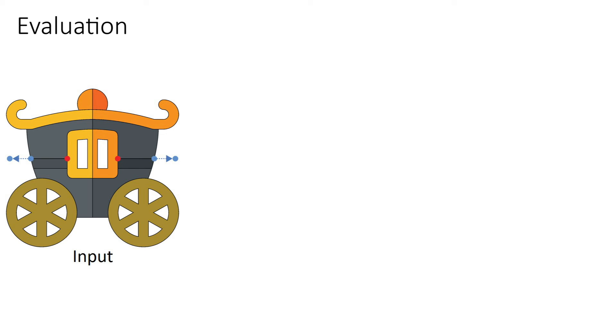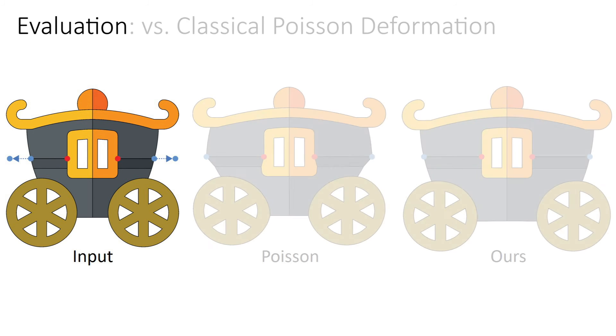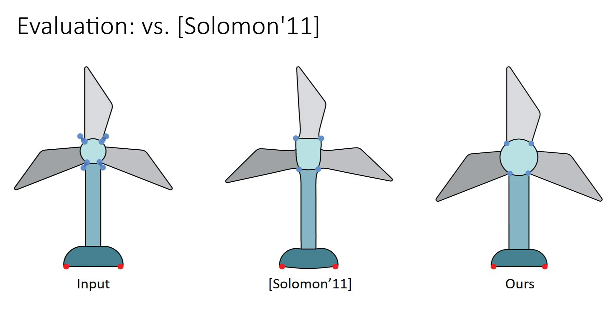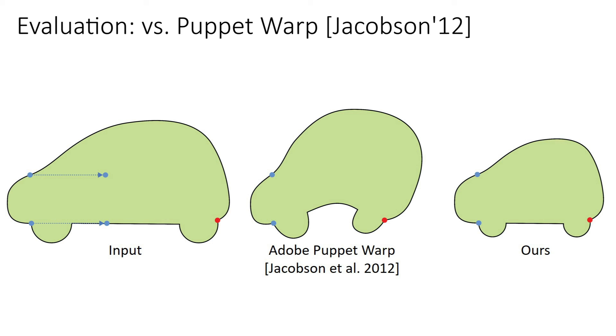We compare clipart reshaped using our method to the outputs of a classical Poisson deformation method, the as-killing-as-possible vector field deformation method of Solomon et al., and the Adobe Puppet Warp tool which implements the biharmonic deformation method of Jacobson et al.